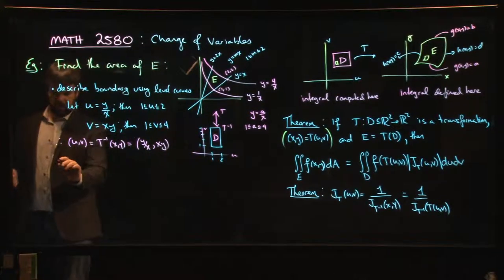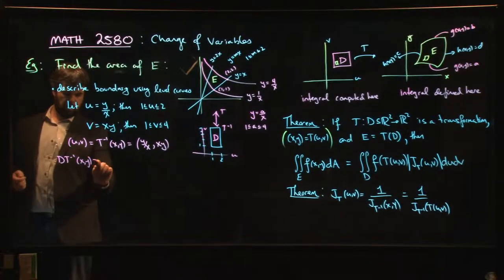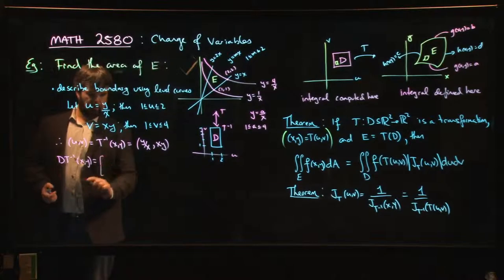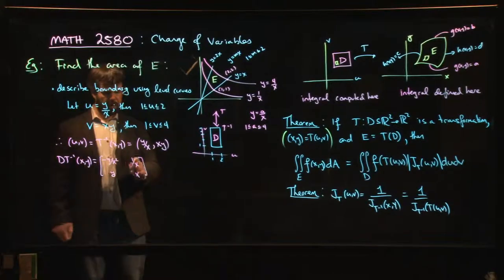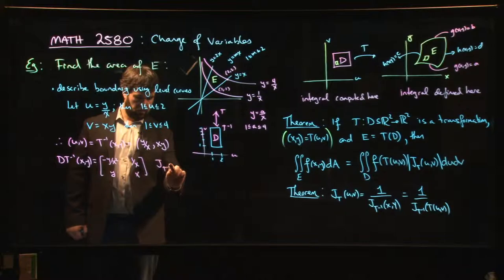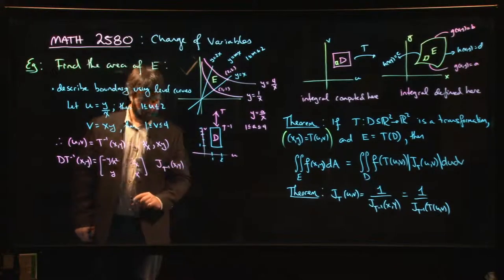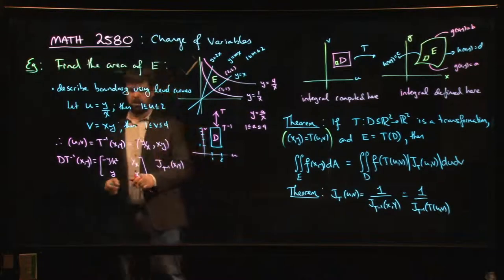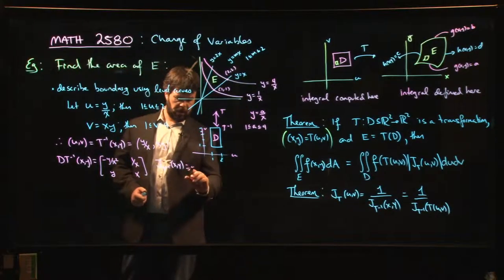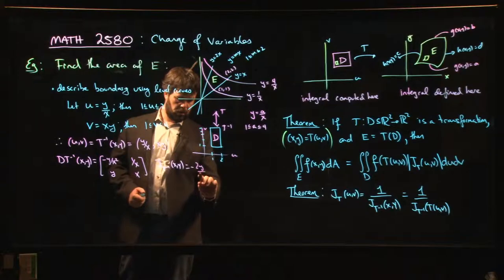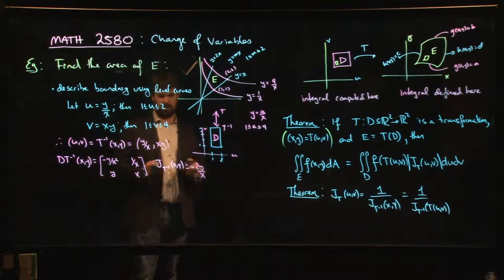Let's compute the derivative of T-inverse. The derivative matrix of T-inverse, which depends on x and y, has x-derivatives first: minus y over x squared, then y. Then the y-derivatives: 1 over x, then x. The Jacobian is the determinant of that matrix. Multiplying through: minus y over x minus y over x gives minus 2y over x.